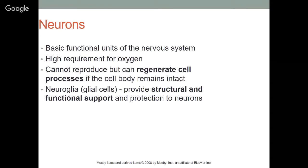Neurons are the basic functional units of the nervous system — they are the nerve cell. Neurons have a high requirement for oxygen; they cannot reproduce themselves, but they can regenerate cell processes if the cell body remains intact. Neuroglia, or glial cells, provide structural and functional support and protection to those neurons.